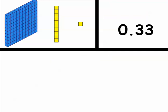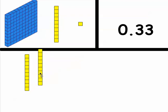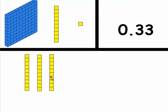One more: we've got a 3 in the tenths place value, so we represent that with 3 tens blocks — three tenths — and three hundredths, represented with 3 ones blocks. Notice again we're not going to use any hundreds blocks because we don't have any whole numbers.